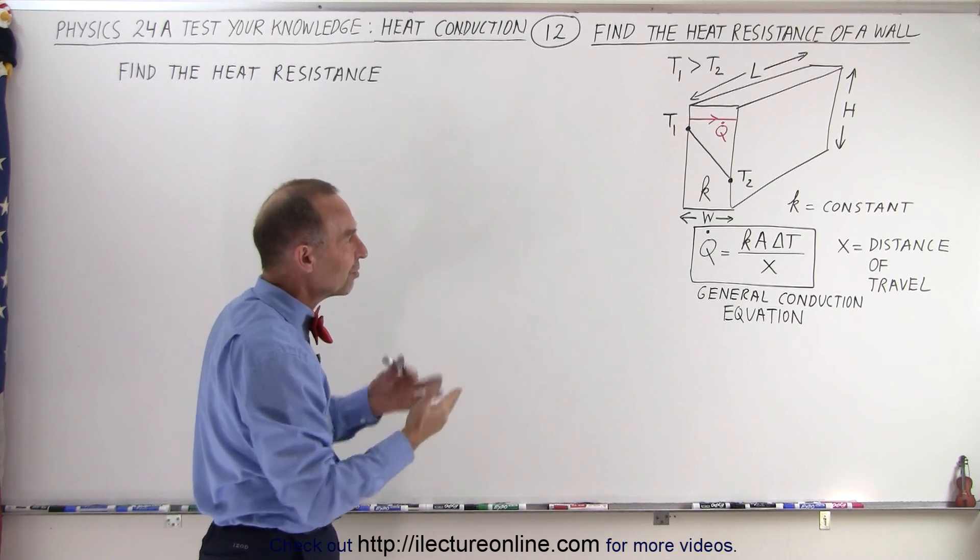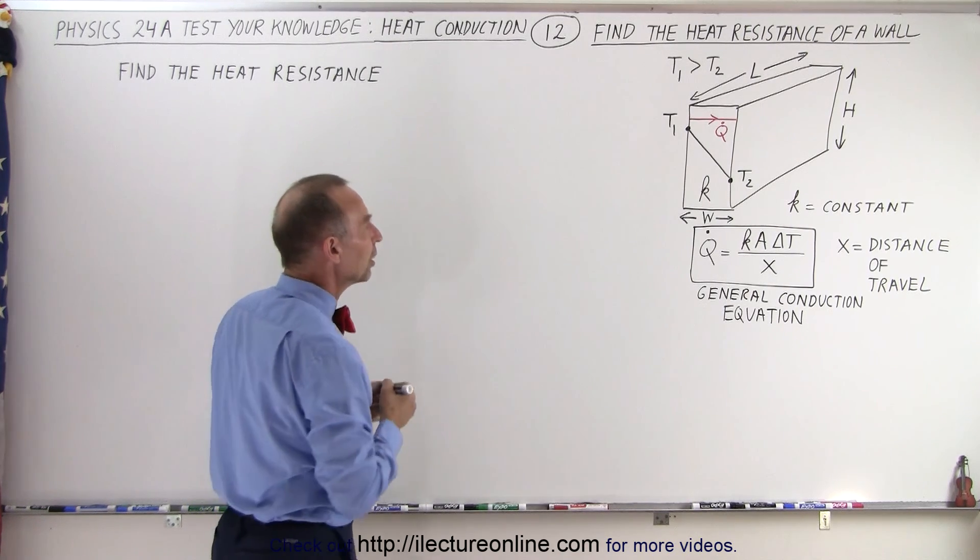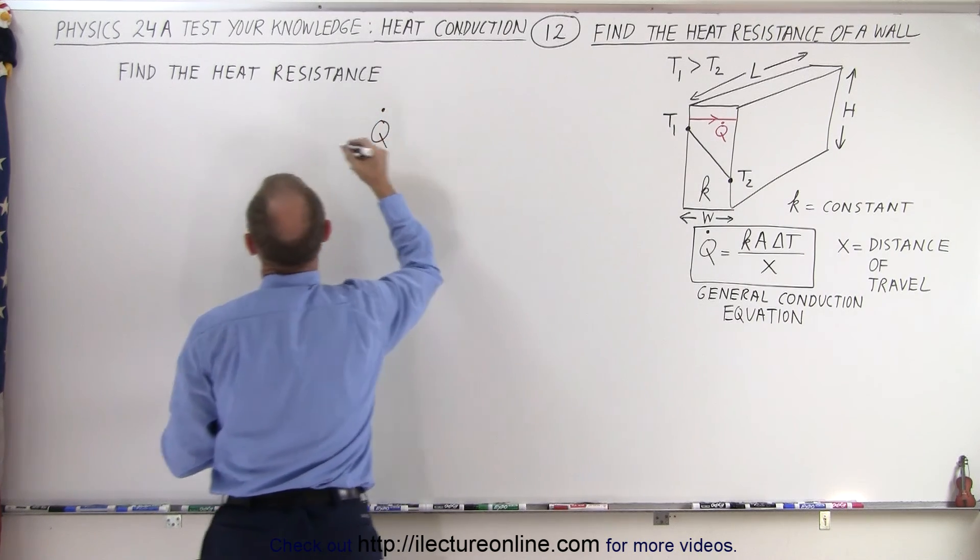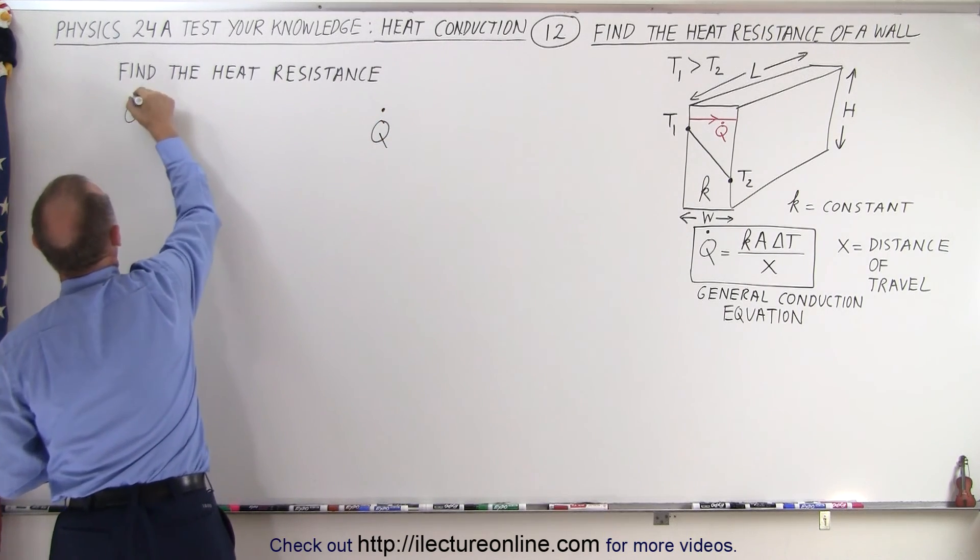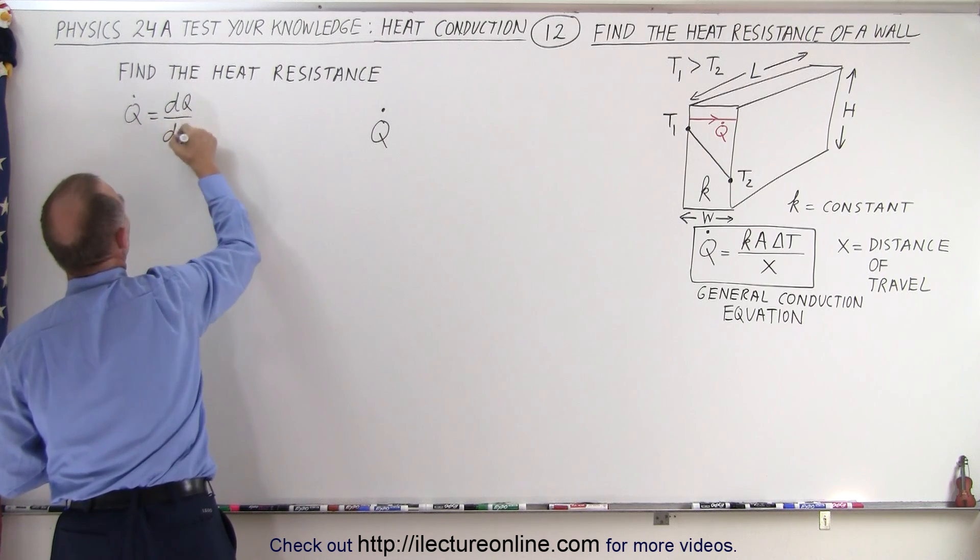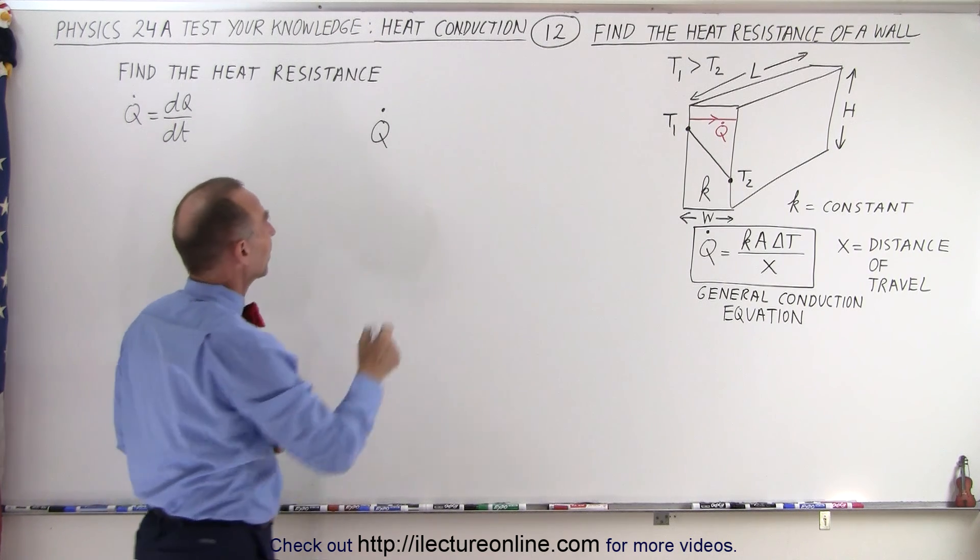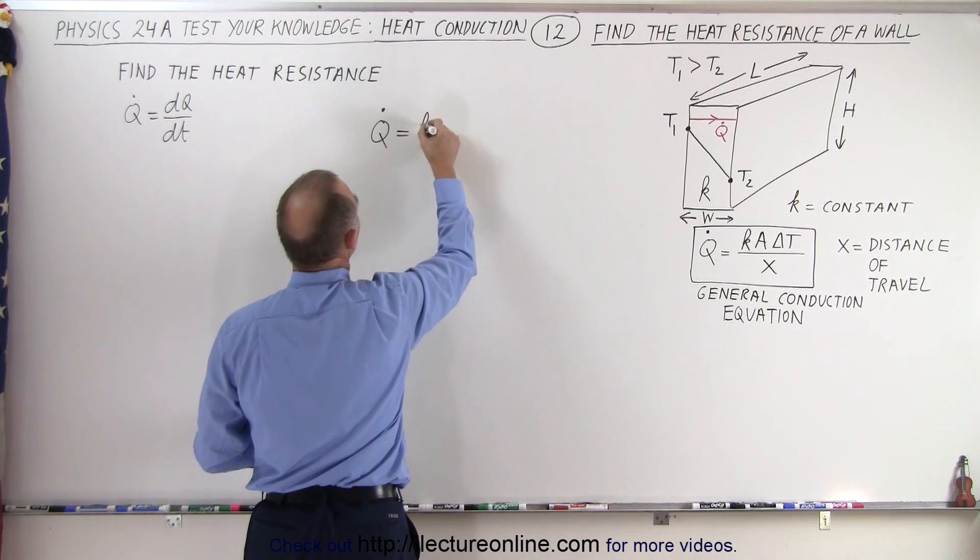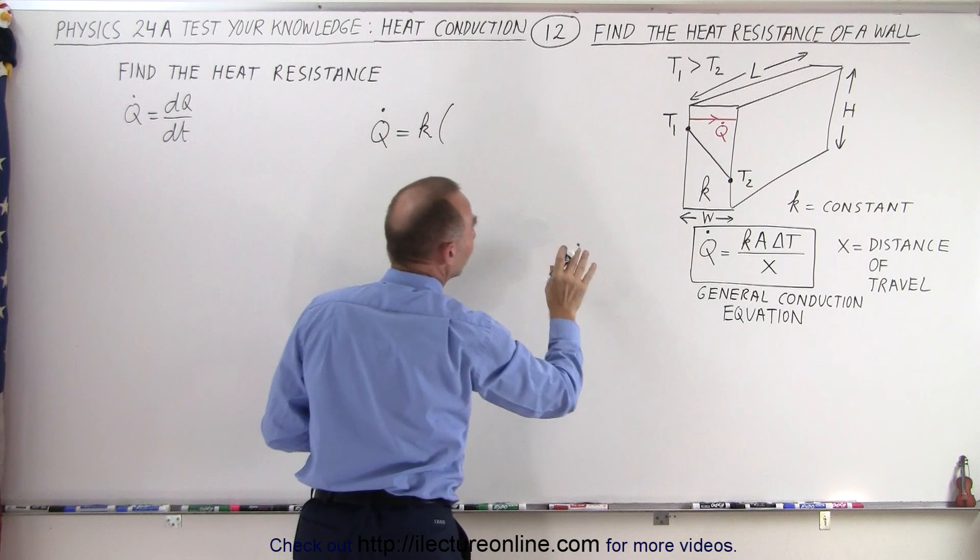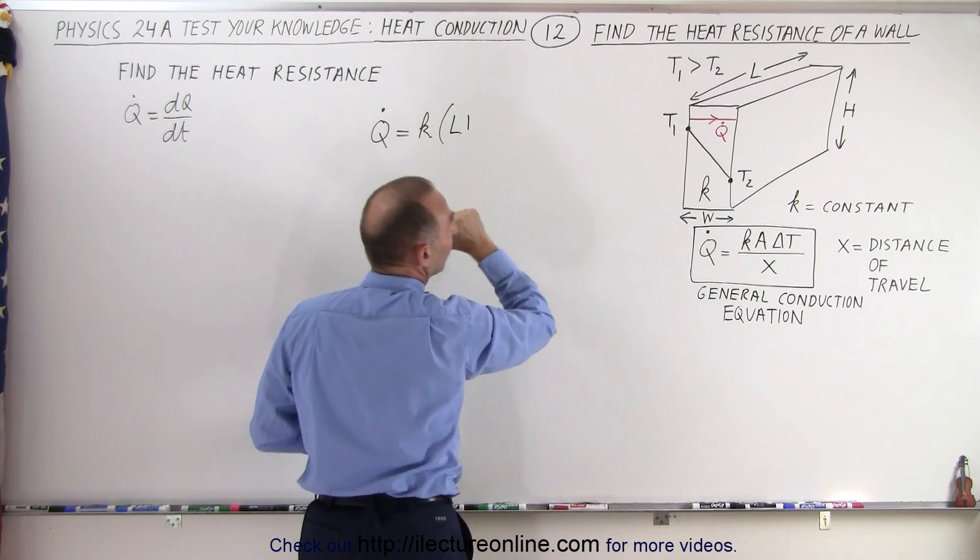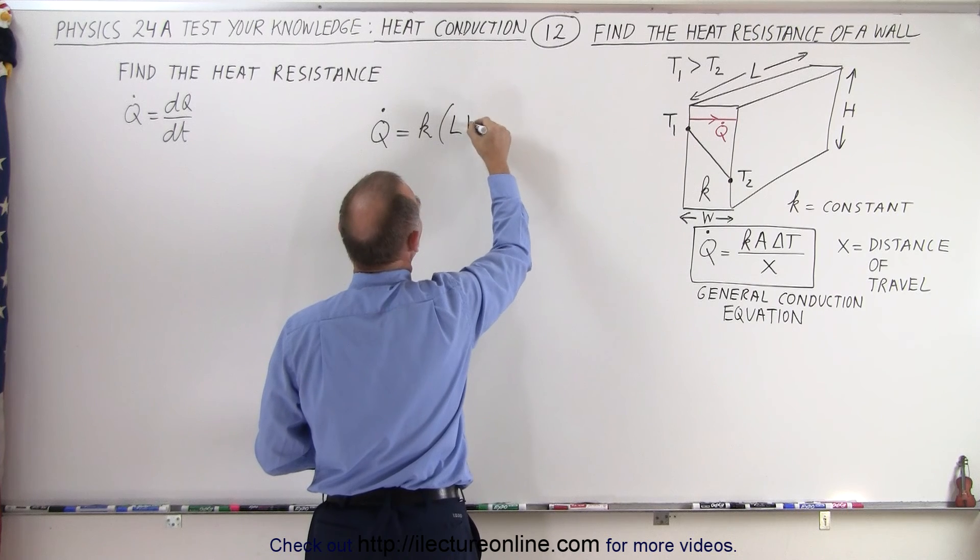So let's write that equation now specific for the wall here. We can write that Q dot, which by the way is the same as dQ/dt, which is basically the amount of heat flowing per unit time. That's going to equal K times the cross-sectional area. In this case it will be the length times the height, not the width. The length times the height.